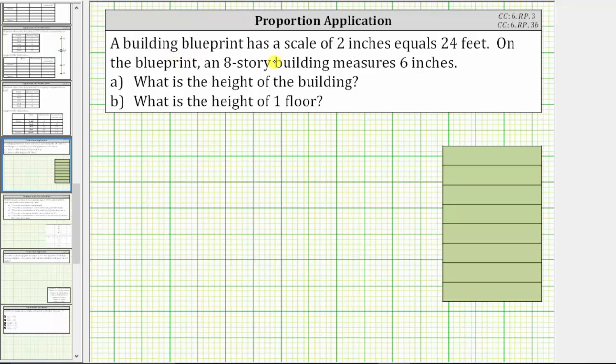The information that we are given, that two inches equals 24 feet, is called the scale factor. So the scale factor is two inches equals 24 feet.